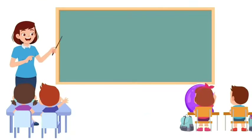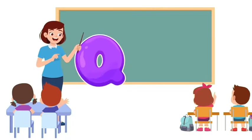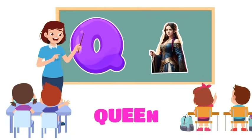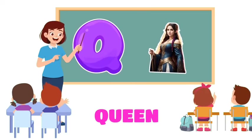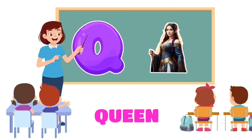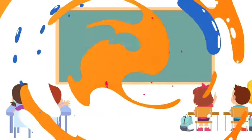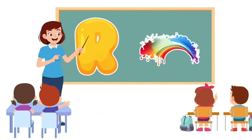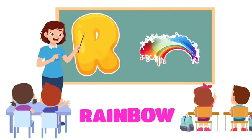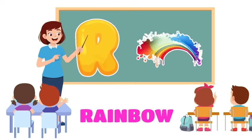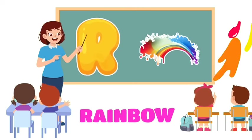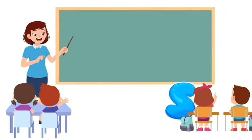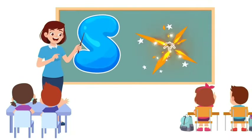Q is for Queen. Q, k, queen. Q, k, queen. Q, queen. R is for Rainbow. R, r, rainbow. R, r, rainbow. R, rainbow.